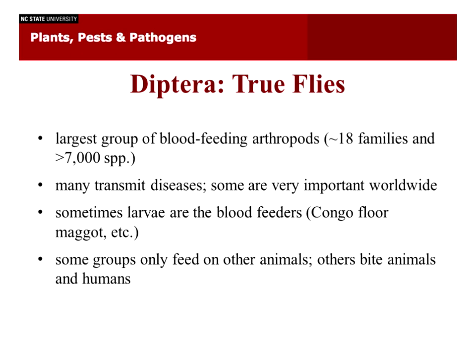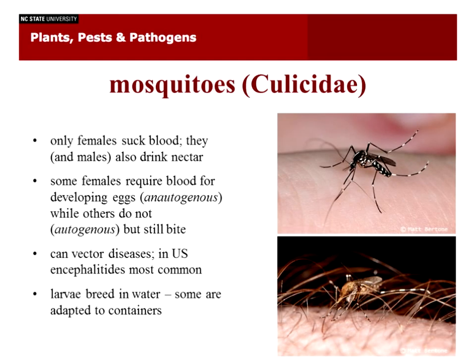Sometimes it's actually the larvae that are blood feeders. One of my favorites is called the Congo Floor Maggot — it's called that because if you sleep on floors in Africa, these little maggots can come up to you, pierce your skin, and try to suck your blood. Some groups only feed on other animals, while others bite animals and humans.